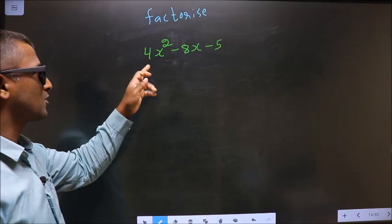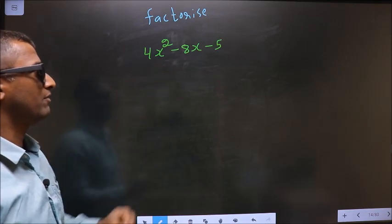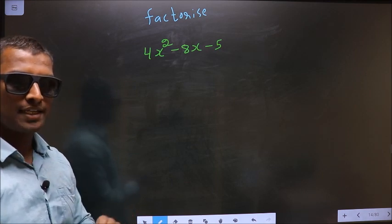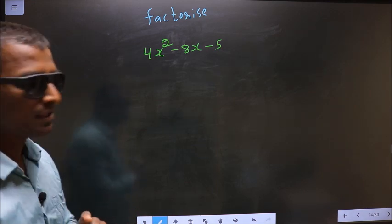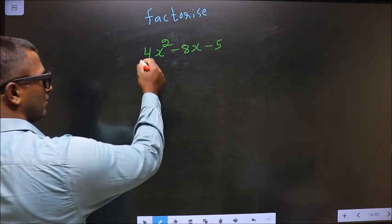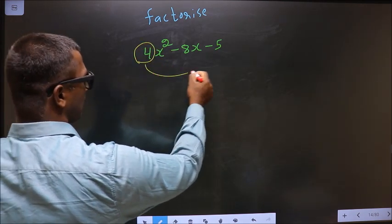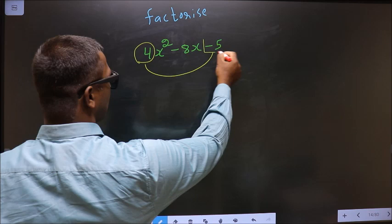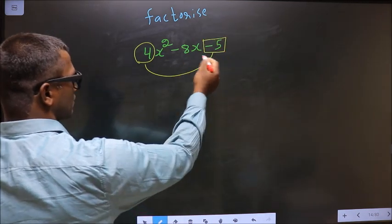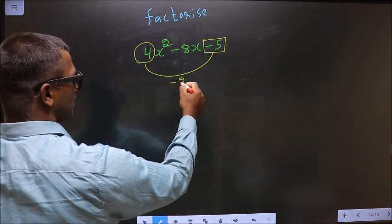Factorize 4x² - 8x - 5. To factorize, step 1: the coefficient of x², which is 4, should be multiplied to the constant, which is -5 here. So 4 × -5 = -20.